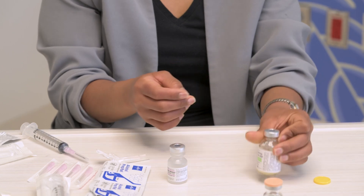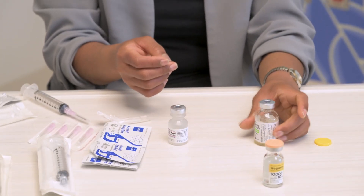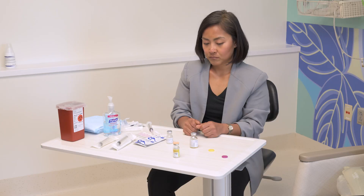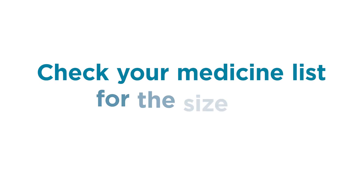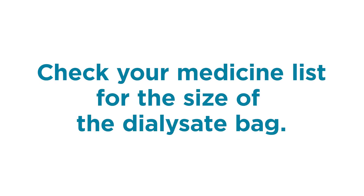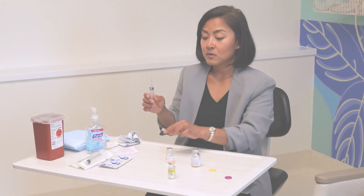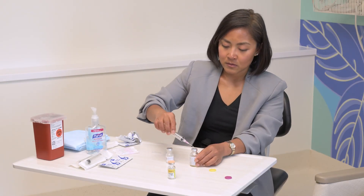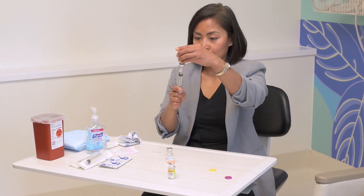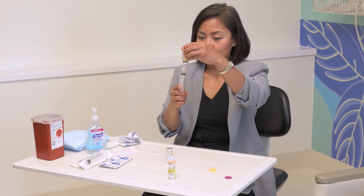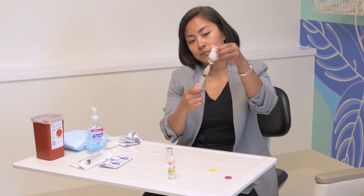Check your child's current medicine list for the amount of antibiotic to add to each bag. Your dose will depend on the size of the dialysate bag. This is important because the bag sizes can change often. Draw up the liquid antibiotic into the syringe to be added to the dialysate bag or ultra bag.